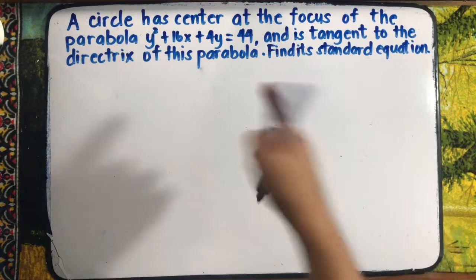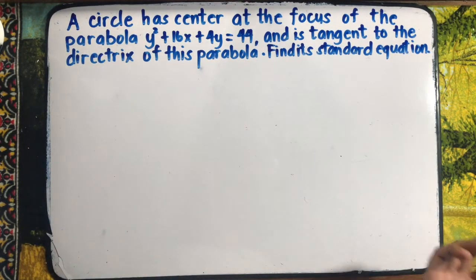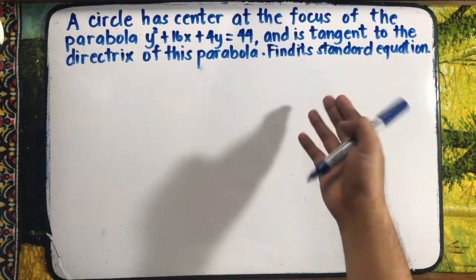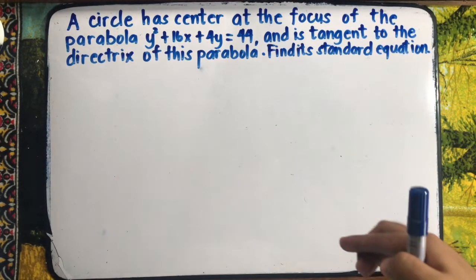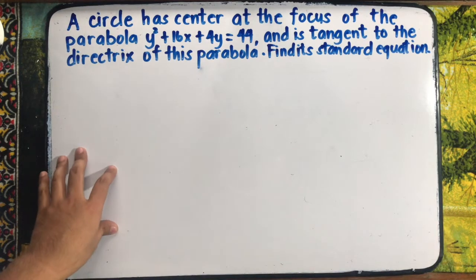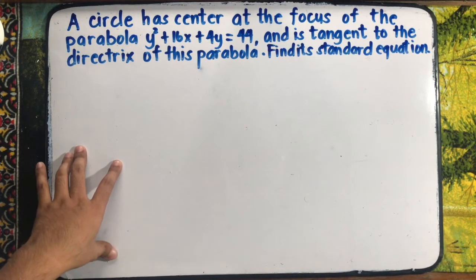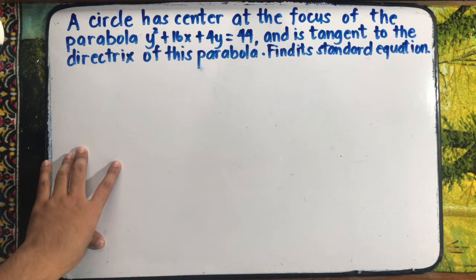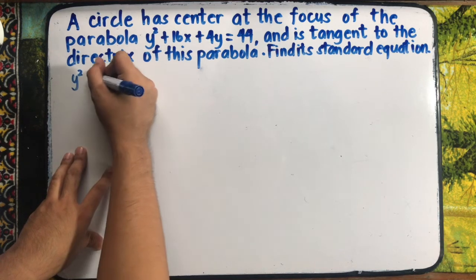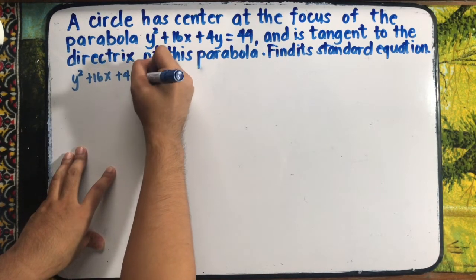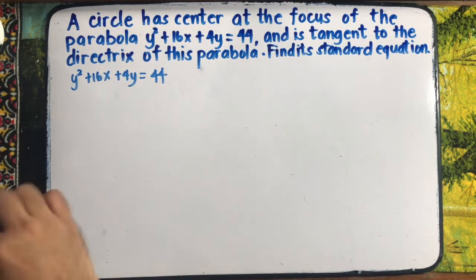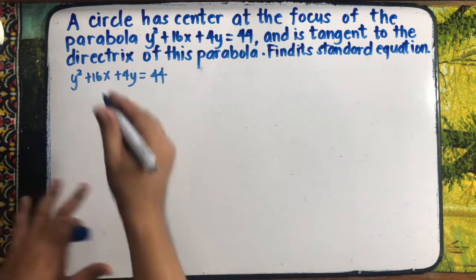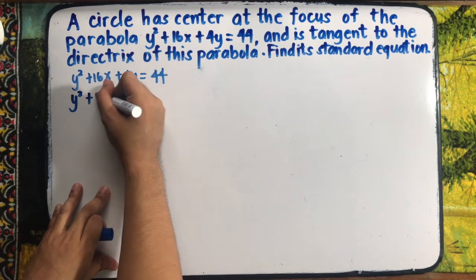The first thing we need to do is manipulate the equation of the parabola. For the equation of the parabola, we need to find its vertex first. After finding its vertex, we will locate its focus and directrix, because the focus will be the new center of the circle and the directrix will determine the radius. So, let us write y² + 16x + 4y = 44 and convert it into standard form.